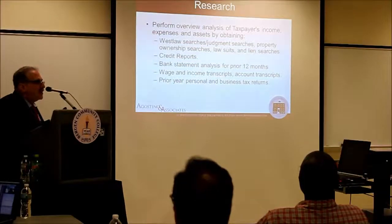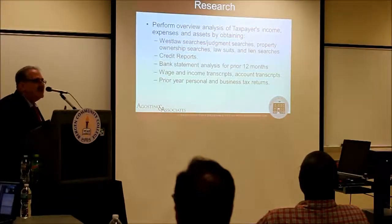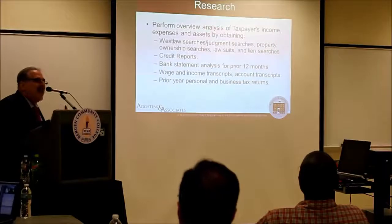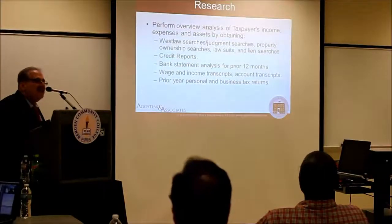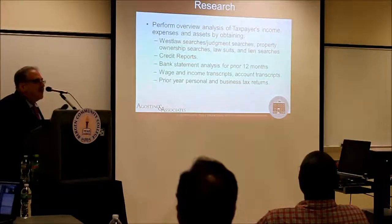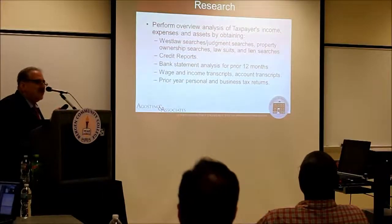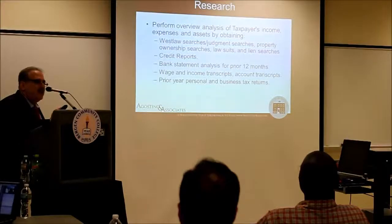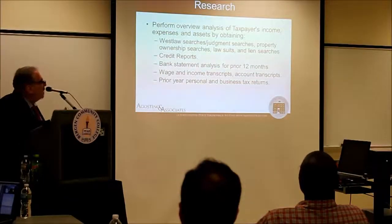The IRS has something called Accurint — they look at the same things we want to look at when we help the taxpayer. You have to have the answer in place. Someone reporting $50,000 who's spending $600,000 on a credit card is going to raise suspicion at the IRS. We have to know it because we're going to do the bank statement analysis.